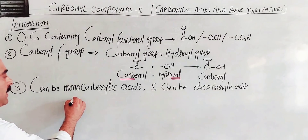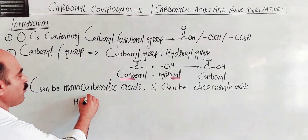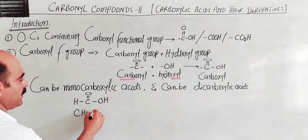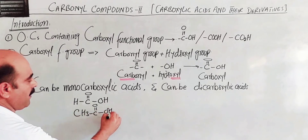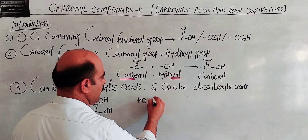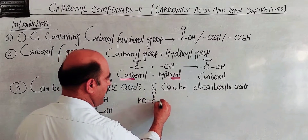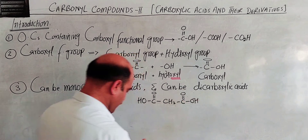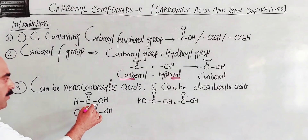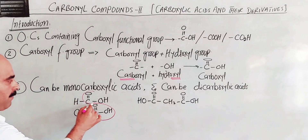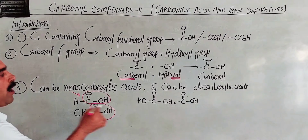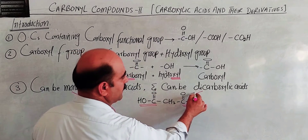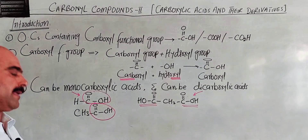For monocarboxylic acids, there is one carboxyl group — for example, a compound with a single C=O and OH. For dicarboxylic acids, there are two carboxyl groups — for example, a compound with two C=O and OH groups such as CH2 with two carboxyl ends. The number of carboxyl groups determines whether it is mono or dicarboxylic acid.